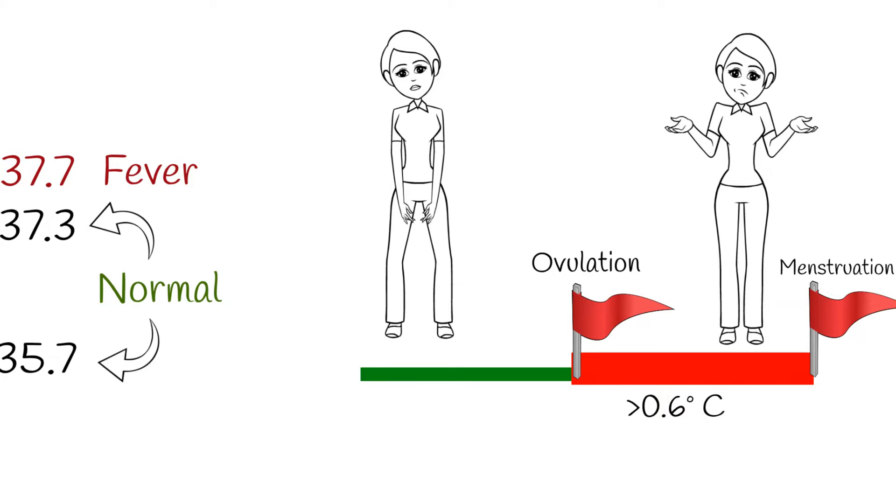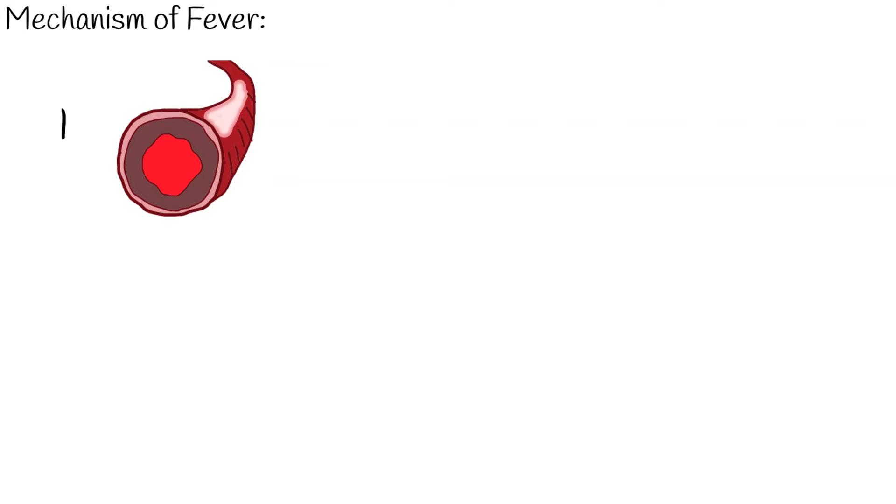Fever is defined as higher body temperature than normal, but still controllable by the hypothalamus. The mechanism of fever: First, peripheral vasoconstriction prevents heat loss and increases internal organs temperature.